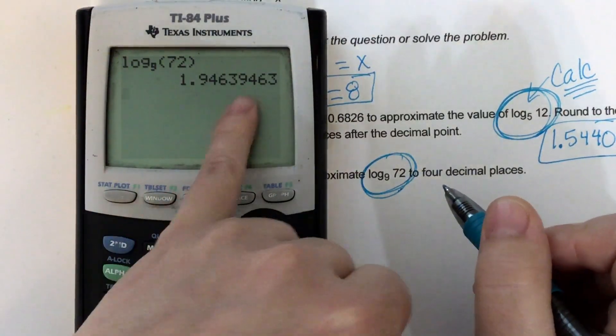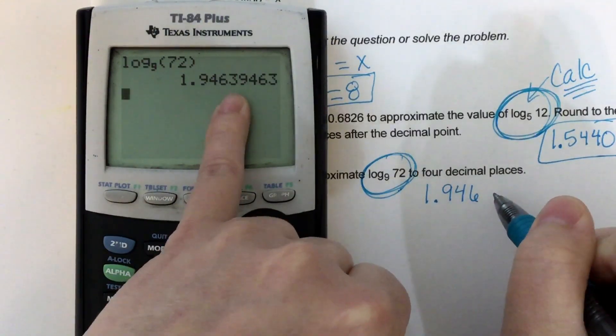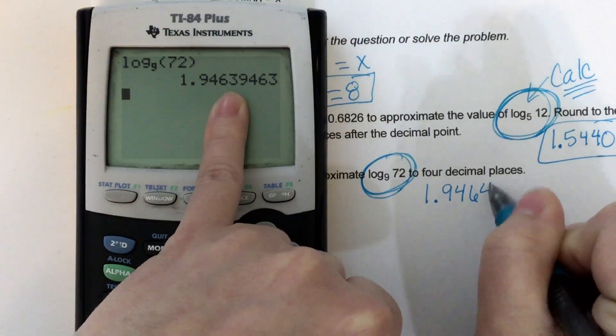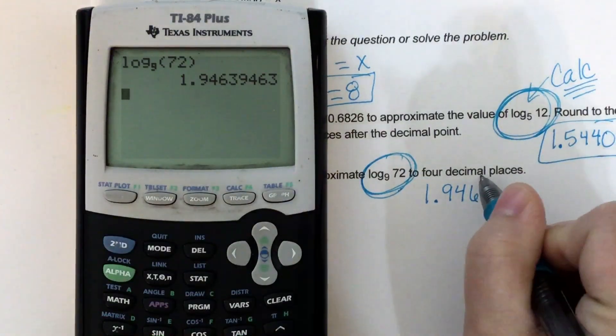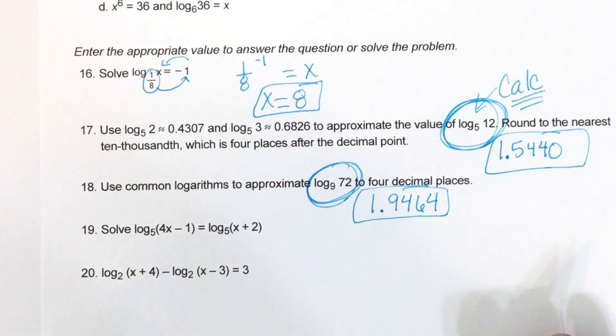Okay, and that 3 is going to round up to a 4 because we have a 5 or higher behind it. Okay, so those are really easy. You just have to know how to use your calculator.